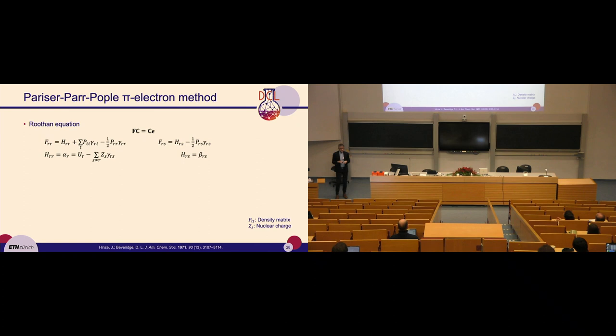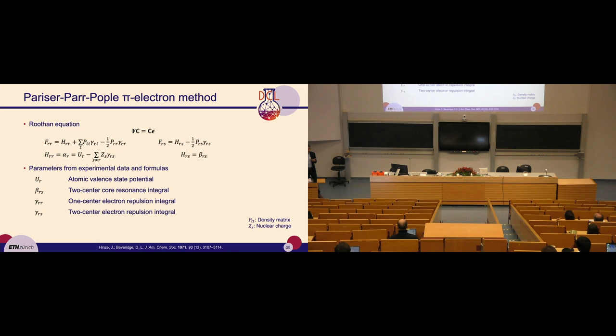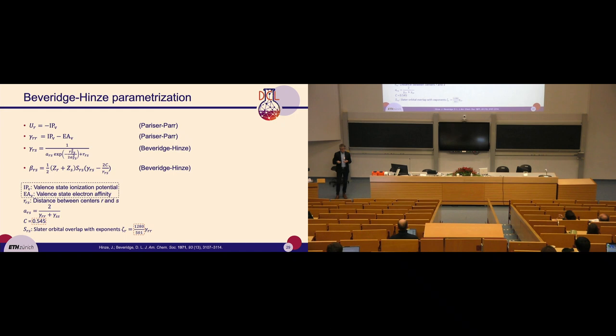We use the PPP method — the simplest method beyond Hückel theory that allows electron-electron correlation. We construct the Fock matrix from the Roothaan equations. PPP is a semi-empirical method with parameters that can be derived from experimental data or physically-motivated formulas. We borrow a parameterization by Jürgen Hinze from the 1970s, deriving all parameters from valence state ionization potentials and valence state electron affinities, with just two empirical parameters.